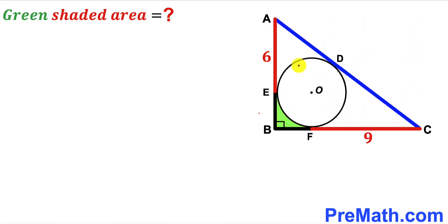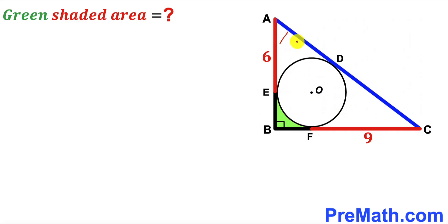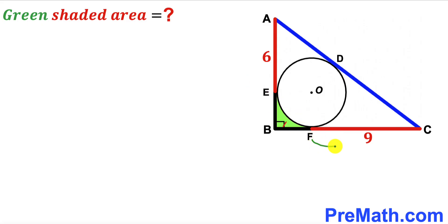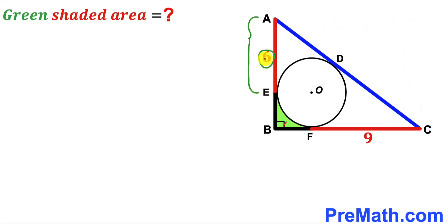Welcome to pre-math. In this video we have a circle with center O fully inscribed in a right triangle ABC, such that points D, E, and F are points of tangency, resulting in a green shaded region. The horizontal segment FC has length 9 units, and the vertical segment AE has length 6 units. Our task is to calculate the area of this green shaded region.